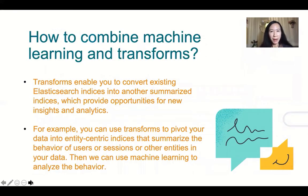We can also combine machine learning and transforms. Transforms enable you to convert existing Elasticsearch indices into another summarized indices, which provide opportunity for new insights and analyses. For example, you can use transforms to pivot your data into entity-centered indices that summarize the behavior of users and other entities in your data. Then we can use machine learning to analyze the behavior.